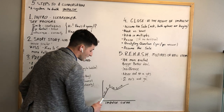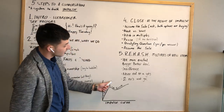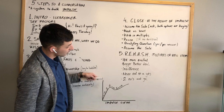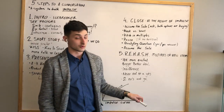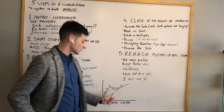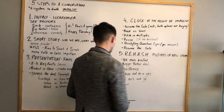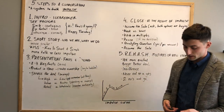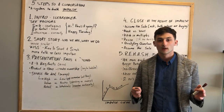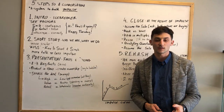If the person gives you a verbal or non-verbal no, and then a second no, always stop right there and say, 'Hey, no worries, thank you so much, have a great day.' The impulse curve starts in step one, moves to the height of impulse at step four where you close, then drops — which is why you get more excited in step five to bring the impulse back up. That's the five steps to a conversation.